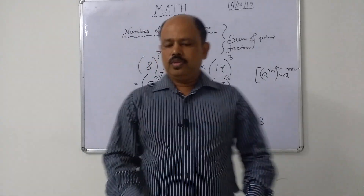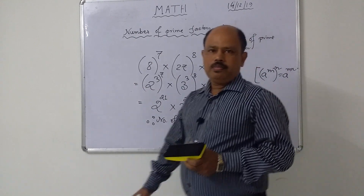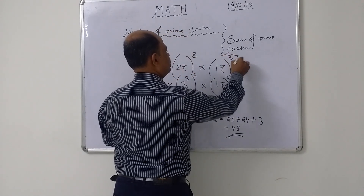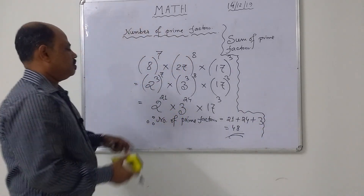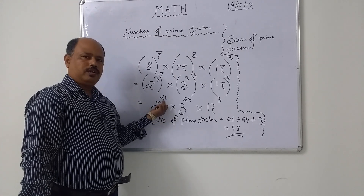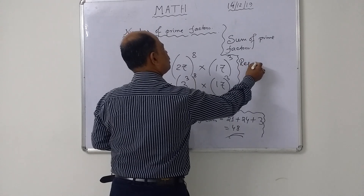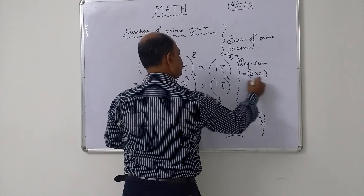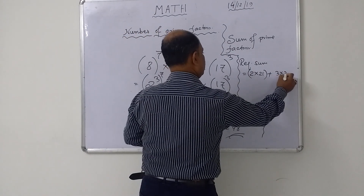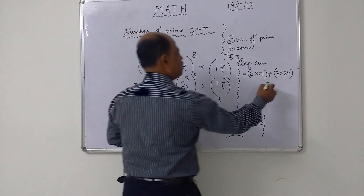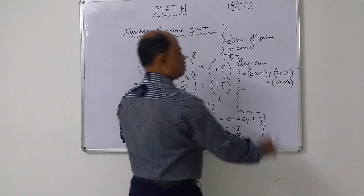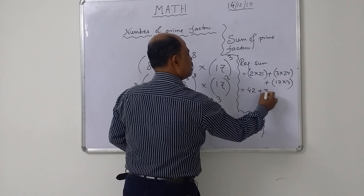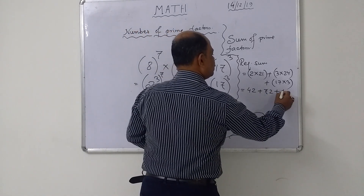And another question: what is the sum of the prime factors? To find the sum of prime factors, it is base into power. So the sum equals 2 into 21, plus 3 into 24, plus 17 into 3. That is 42 plus 72 plus 51.